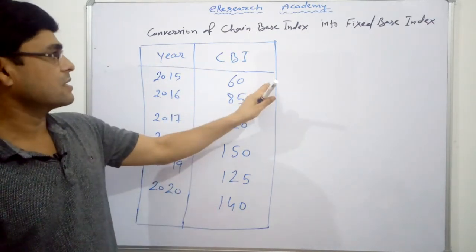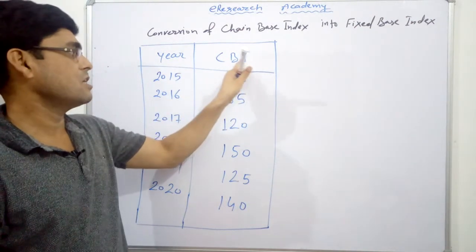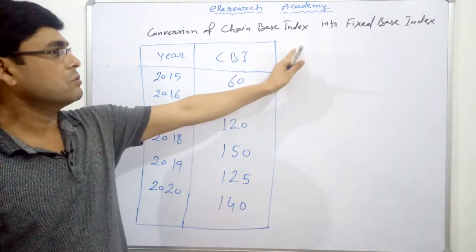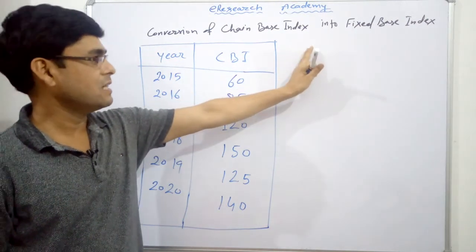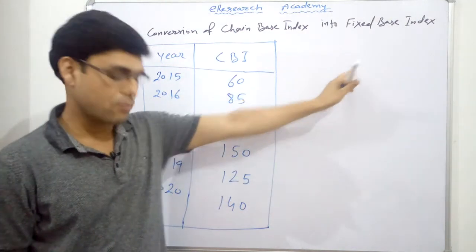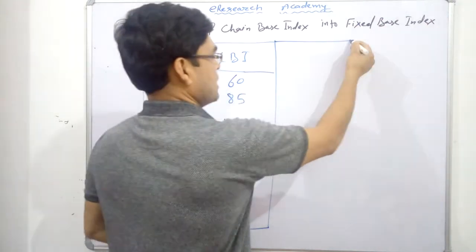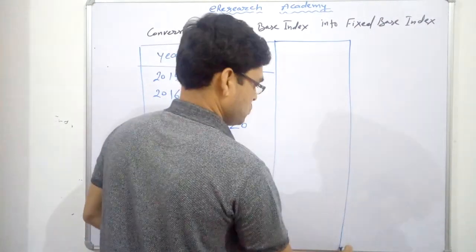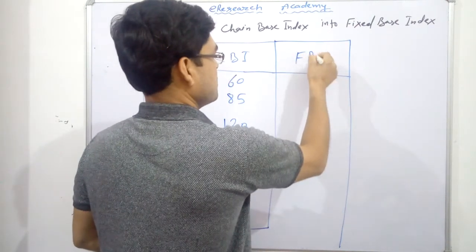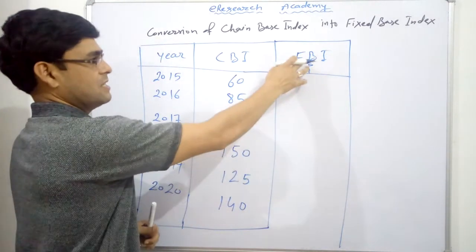And we are asked to construct the fixed base index or convert this chain base index into the fixed base index. So we have to not to do anything that is simply we need to apply a formula. The formula is quite easy. It becomes easy as we draw one more column here. That is the fixed base index that we have to find out.